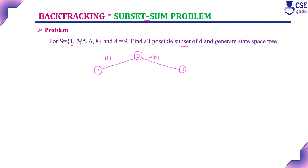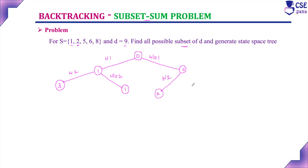Next, consider element 2. If we add element 2 to 1, the value is 1 + 2 = 3. If we do not add element 2, the sum remains 1. Similarly, from the right side value 0: if we add element 2, we get 0 + 2 = 2. If we do not add element 2, the value remains 0. We need the sum value 9, so we proceed to the next level.